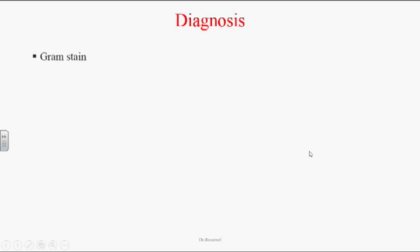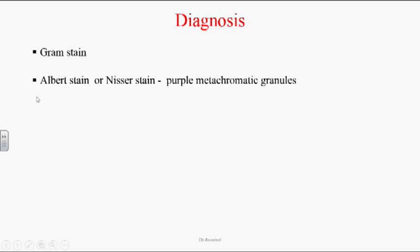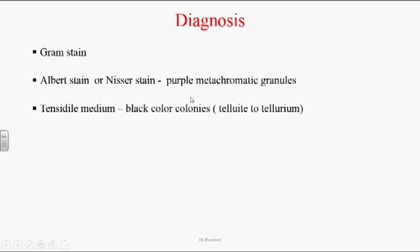Diagnosis: This infection can be diagnosed by Gram staining, where V, X, Chinese letter, palisade, and club-shaped arrangements are visible. The organism can be identified with Albert stain or Neisser stain — Corynebacterium diphtheriae, because of its metachromatic granules, appears as purple-colored organisms compared to diphtheroids. On tellurite medium, these organisms grow as black-colored colonies because they reduce tellurite to tellurium.